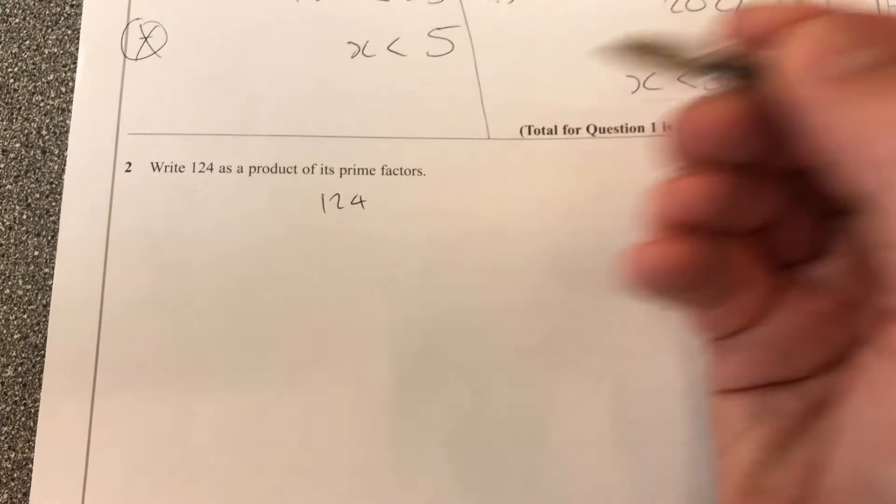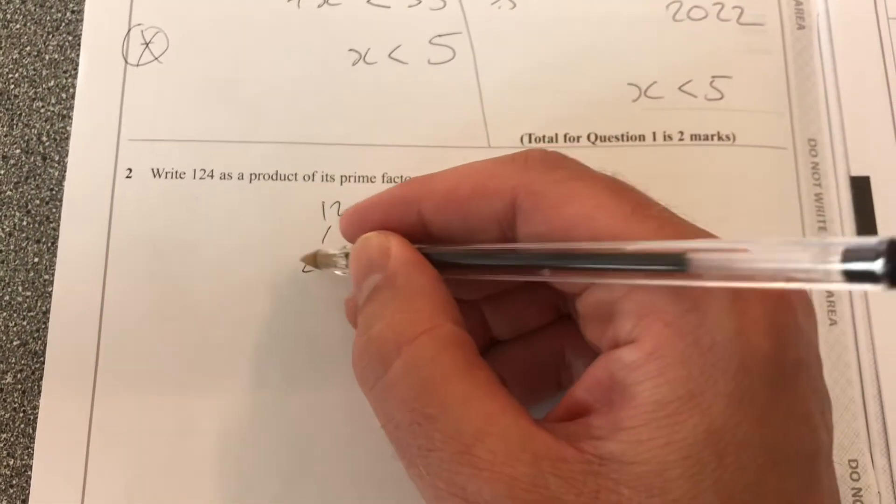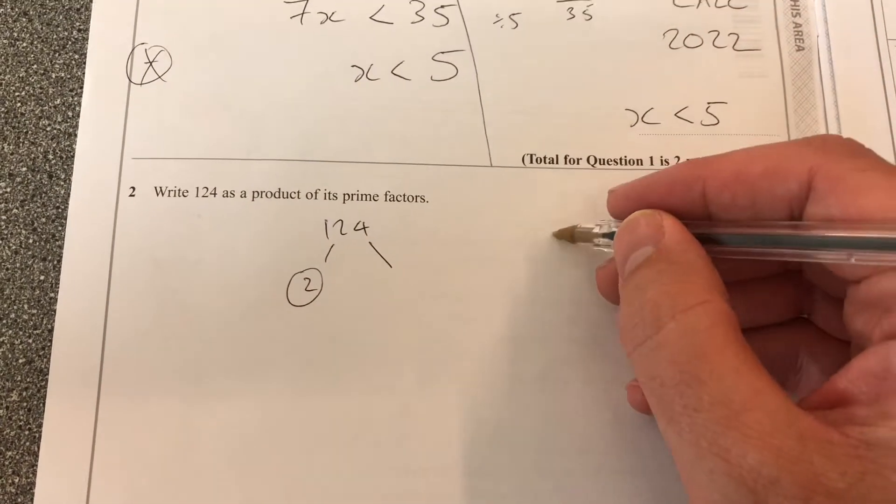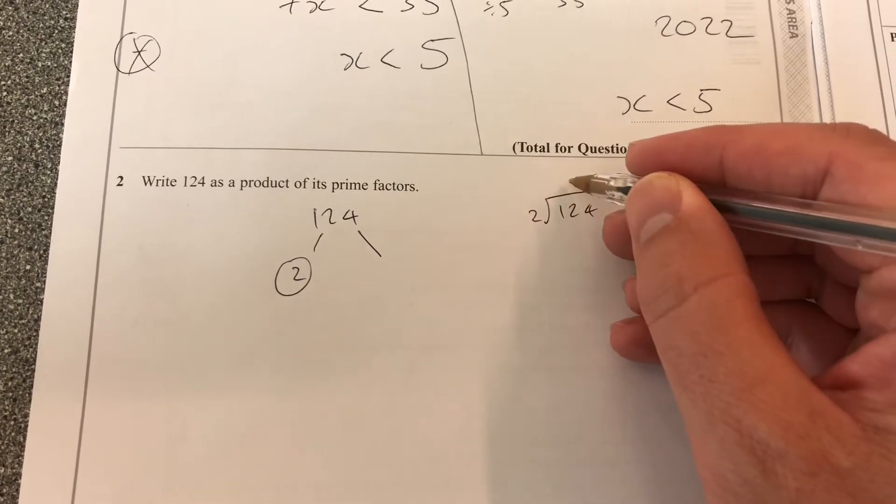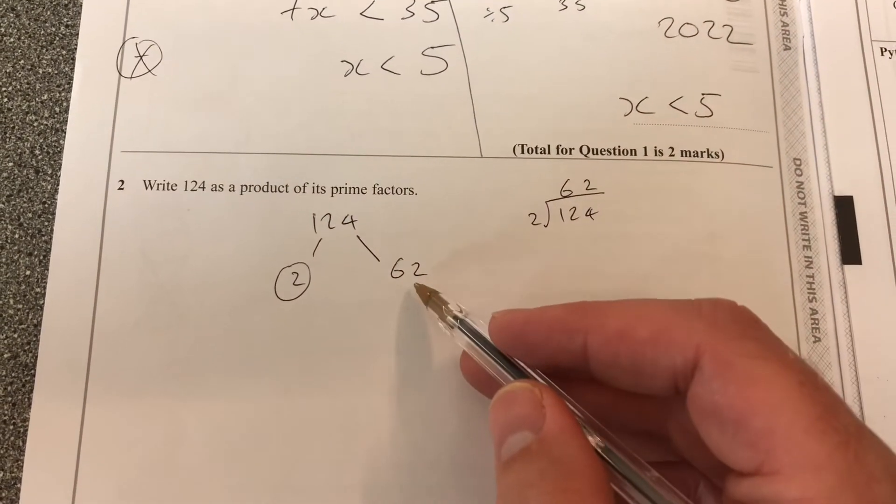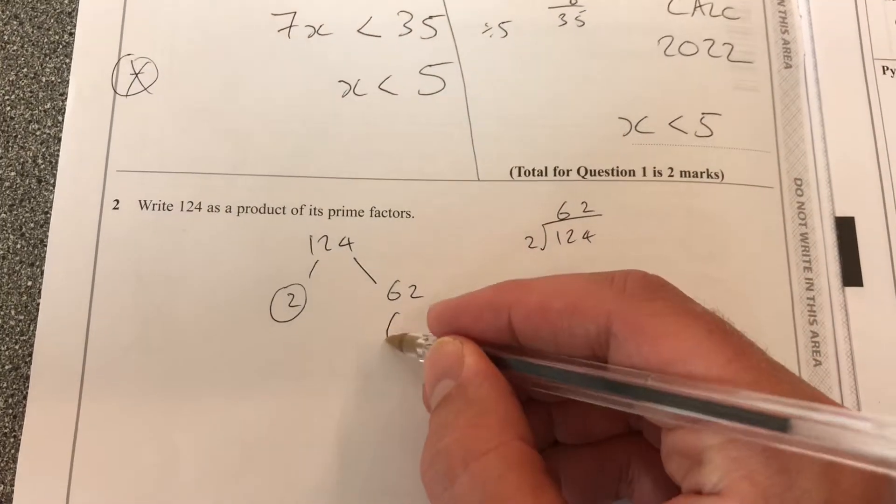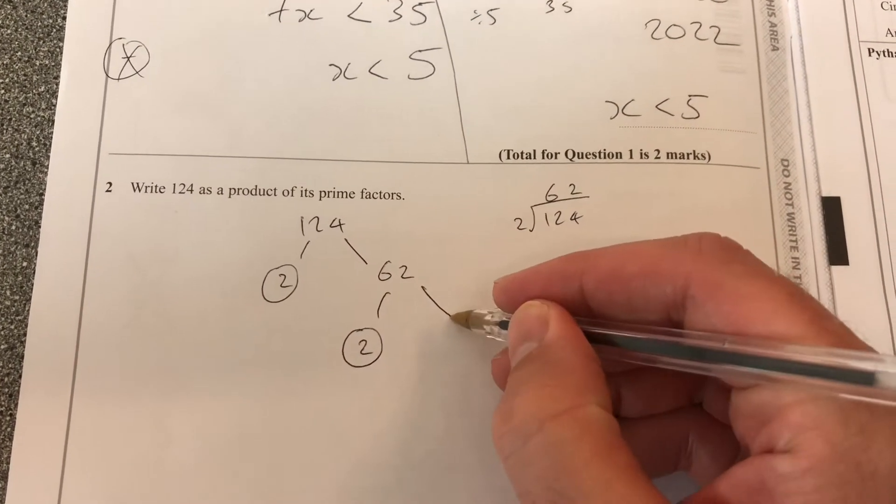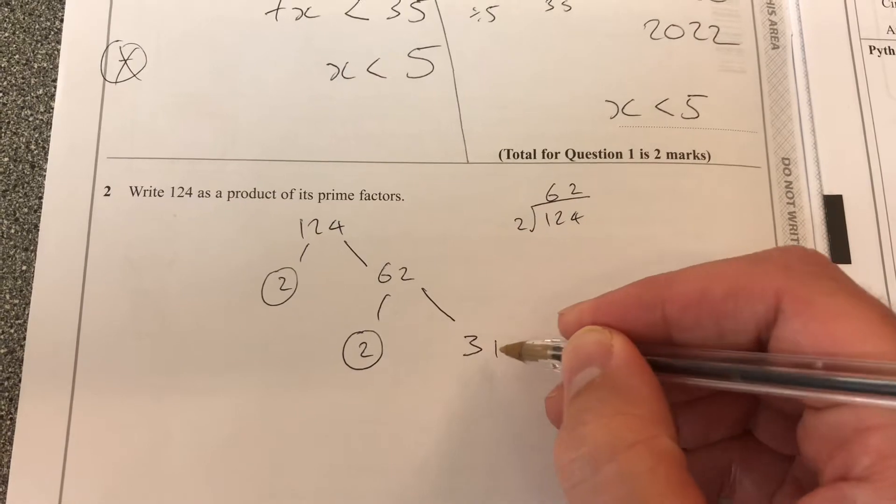124 as a product of its prime factors. 2 is a prime factor. So 124 divided by 2 is going to be 62. That doesn't look prime to me. It looks even, so take out another 2. And then I get 31.